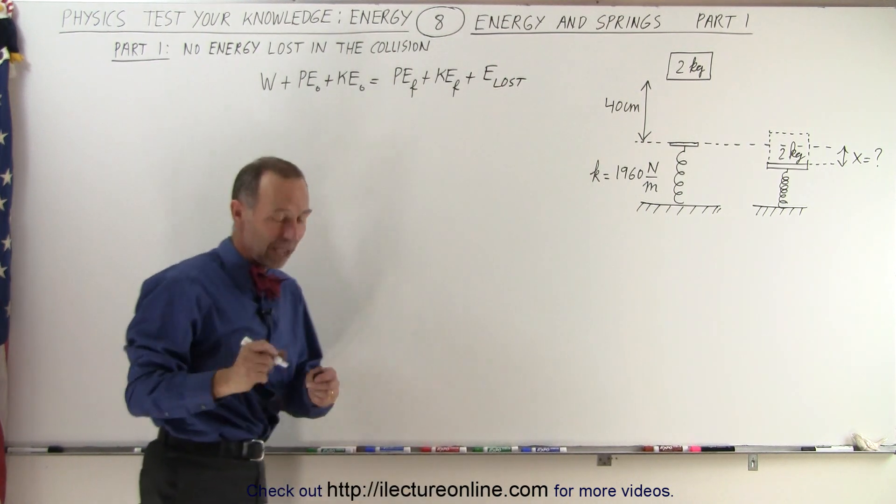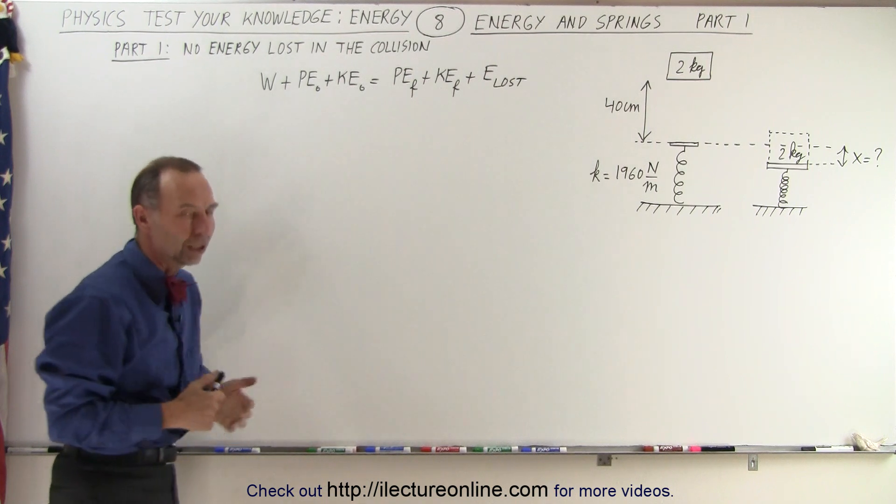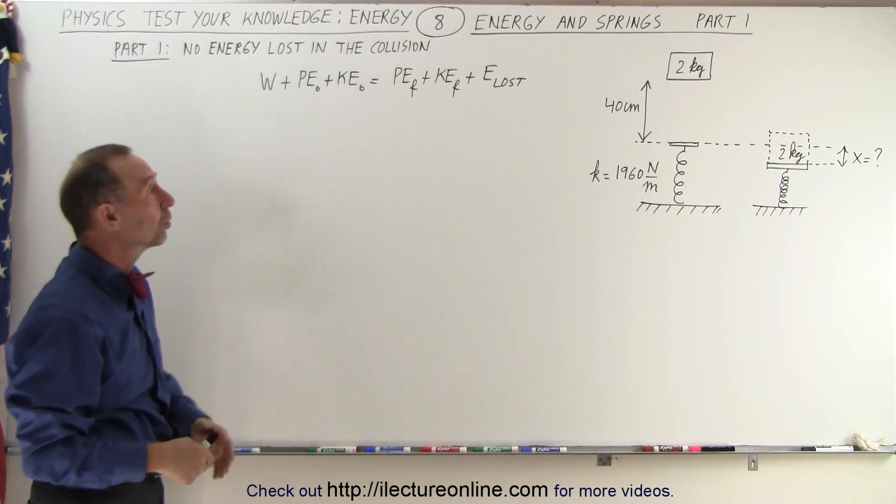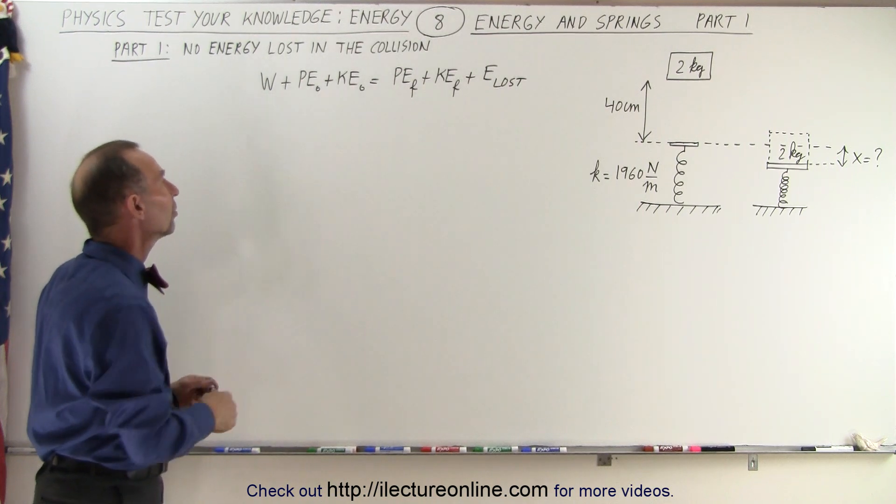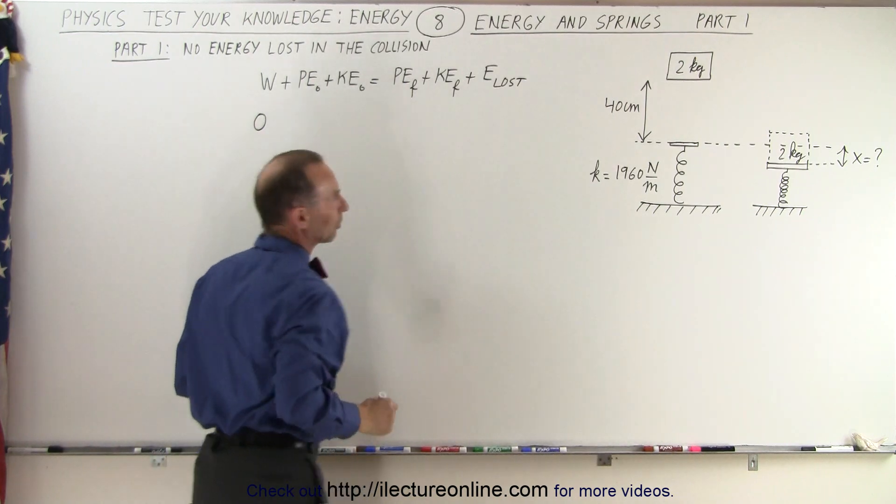But wait a minute. We have a hint here. For part 1, no energy is lost in the collision. That means that energy lost portion can go to zero. There's no work put into the system. So we can already say that this is equal to zero, and that will be equal to zero.